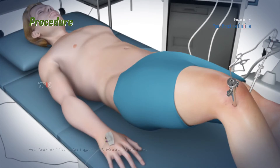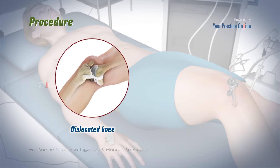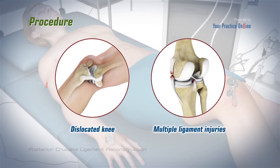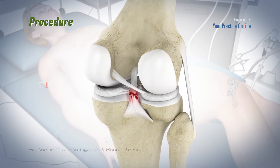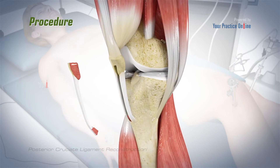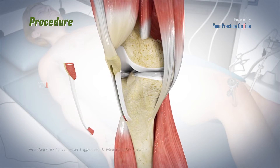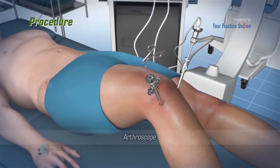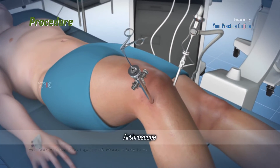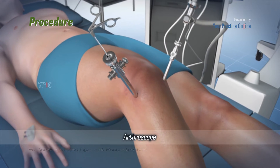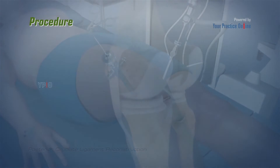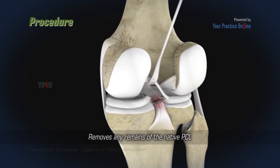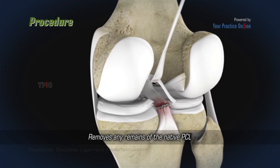Procedure: Generally, surgery is considered in patients with a dislocated knee and multiple ligament injuries, including the PCL. Surgery involves reconstruction of the torn ligament using a tissue graft taken from another part of the body or from a donor. Surgery is usually carried out with the help of an arthroscope. Using a few small incisions, the surgeon inspects the knee and removes any remains of the native PCL using an arthroscopic shaver.